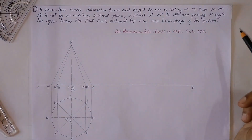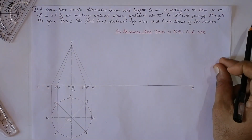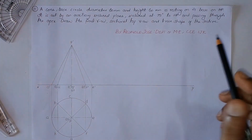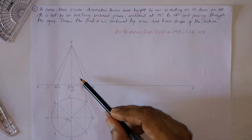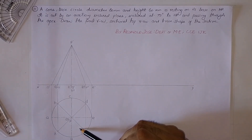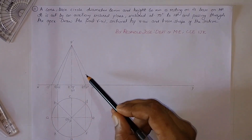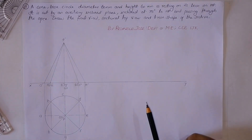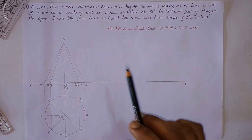This is a problem involving a sectioning process. The very first step is drawing the symbolic front view and symbolic top view of the given solid using type V lines, that is continuous thin lines. I have already done that step here. The second step is to locate the section plane.